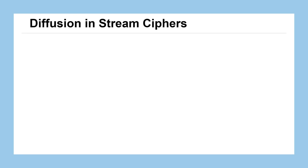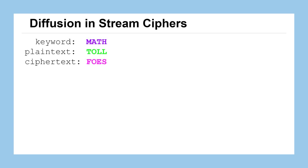Let's take a look at how diffusion — this thing we haven't seen quite yet — plays out, or rather doesn't play out, in stream ciphers. Looking at a Vigenère cipher here, a nice short one where we know the keyword, the plaintext, and the ciphertext: we have the keyword 'math', the plaintext 'toil', which when we apply the keyword to the plaintext gives us the ciphertext 'foes'.